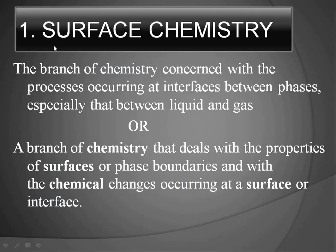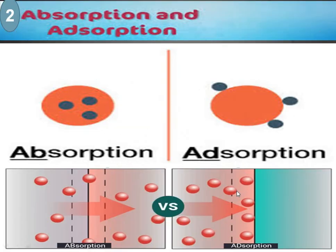Surface chemistry is a branch of chemistry which is concerned with the processes occurring at the interfaces between phases, especially between liquid and gas. In surface chemistry we discuss about the interfaces between the phases — two phases, one can be solvent, one can be adsorbent or adsorbate. It is a branch of chemistry that deals with the properties of surfaces or phases which are the boundaries where a chemical or physical reaction occurs.